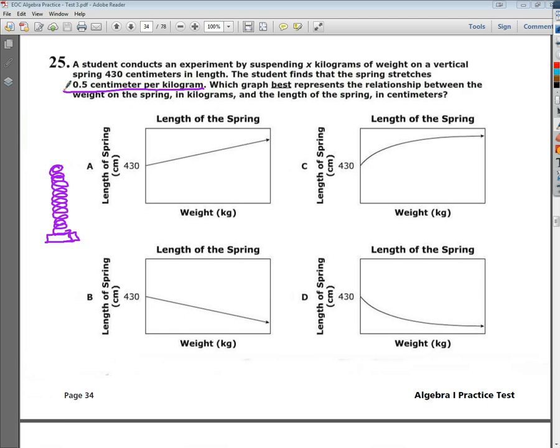Which graph best represents the relationship between the weight on the spring in kilograms and the length of the spring in centimeters? Now, I'm going to look at my axis labels. So I've got weight here. As you can see, as weight increases, what story do I want it to tell?